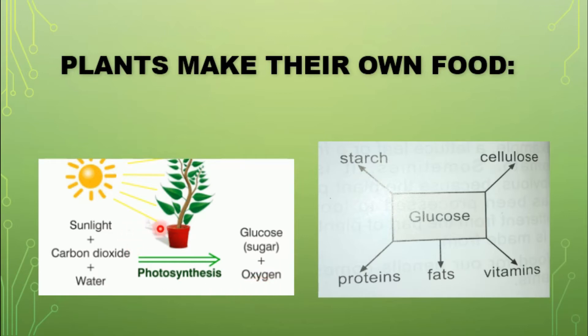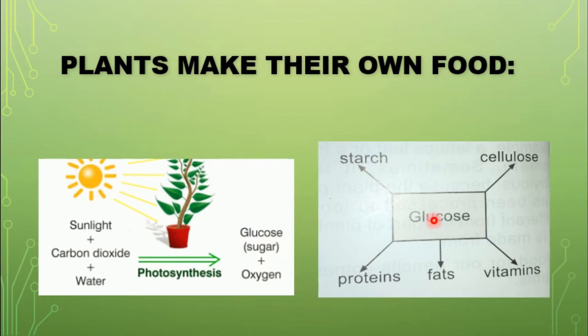The process by which plants prepare their food is called photosynthesis. In this process, plants prepare food and produce glucose.